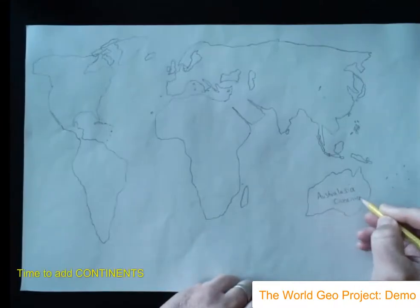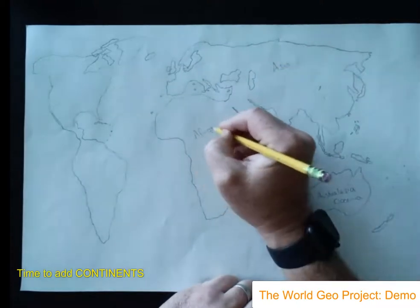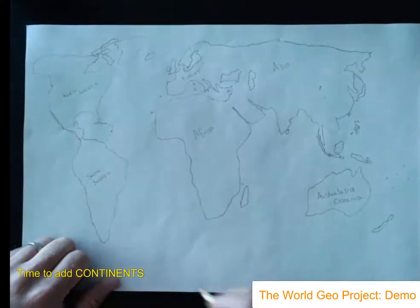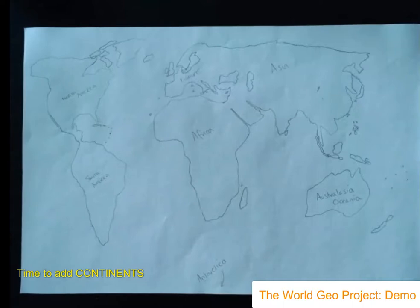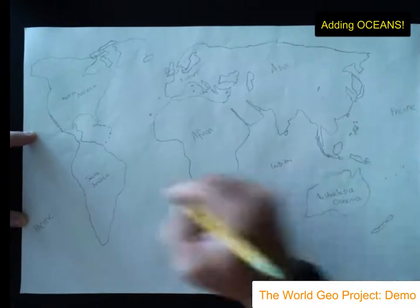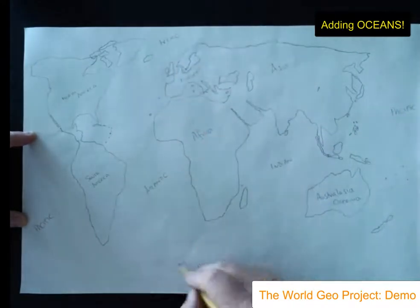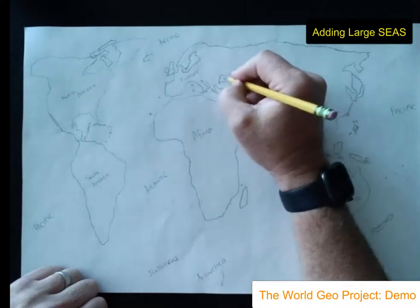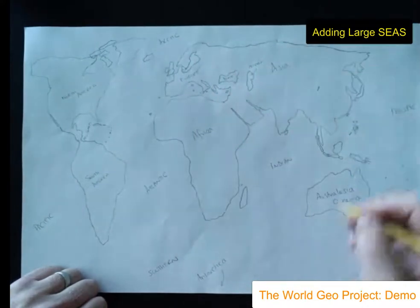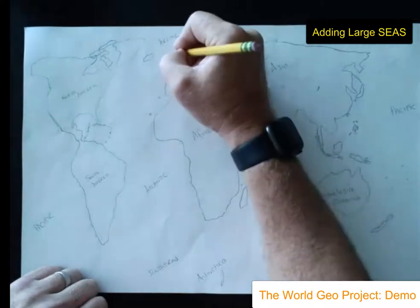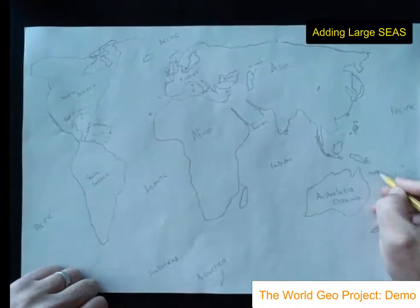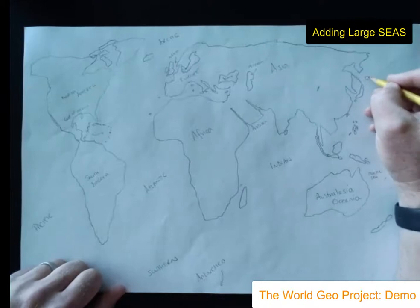Once the outline is completed, the next task is to label. I'm labeling the seven continents, and the continent in the far bottom right-hand corner is Australasia or Oceania — I stay away from calling it Australia as a continent, based on my education in England. Then we add the major oceans and well-known seas: the Caribbean, North Sea, Arabian Sea, Sea of Japan, Coral Sea, and the Gulf of Mexico.